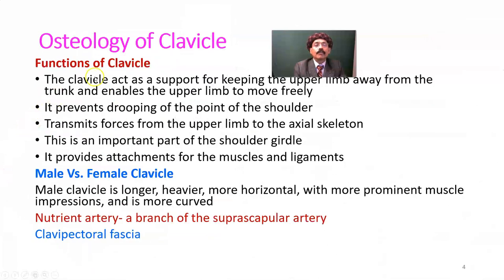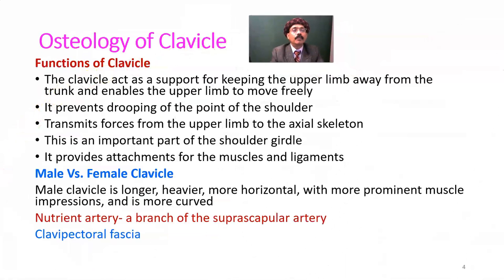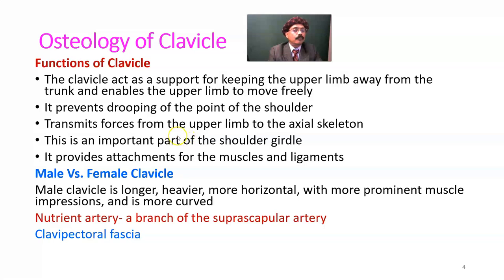The functions of the clavicle are very important. It acts as a support for keeping the upper limb away from the trunk and enables the upper limb to move freely. It prevents drooping of the point of the shoulder. It transmits forces from the upper limb to the axial skeleton through the sternum. It is an important part of the shoulder girdle and provides attachment for muscles and ligaments.